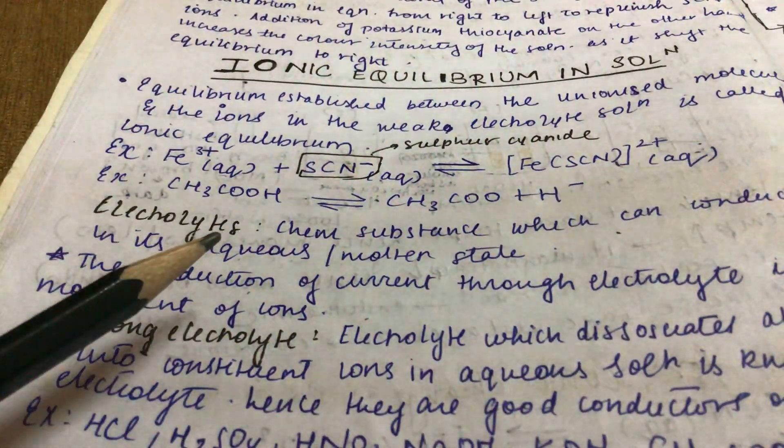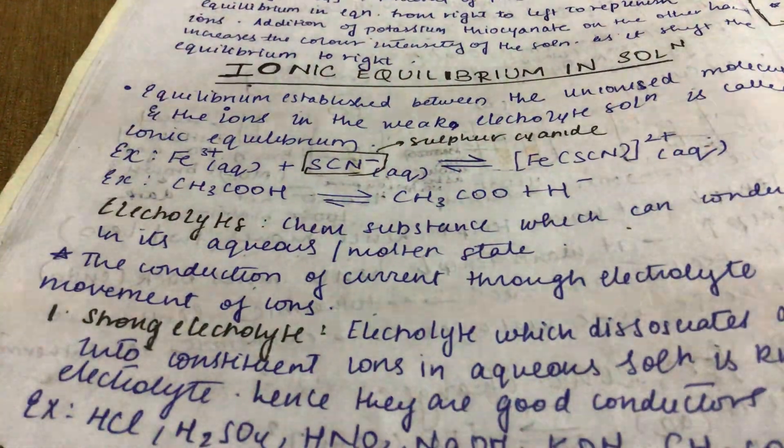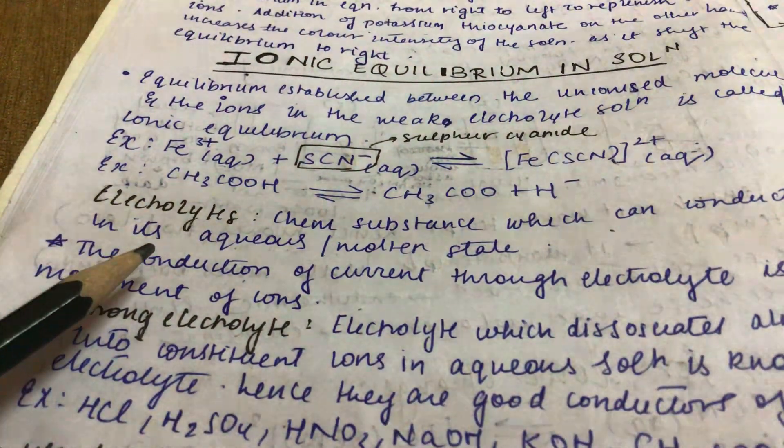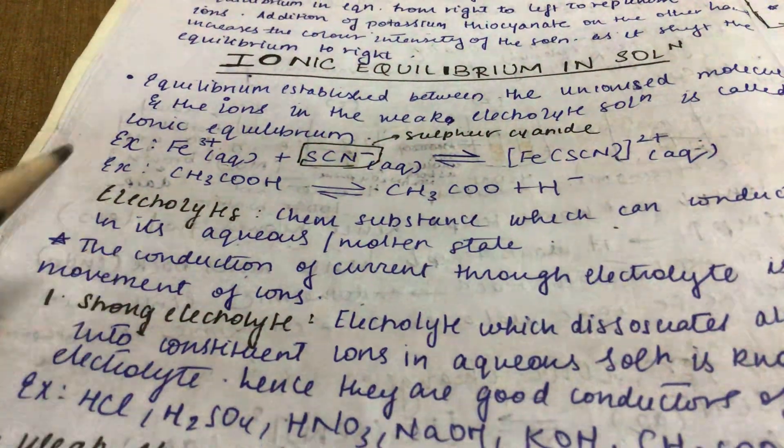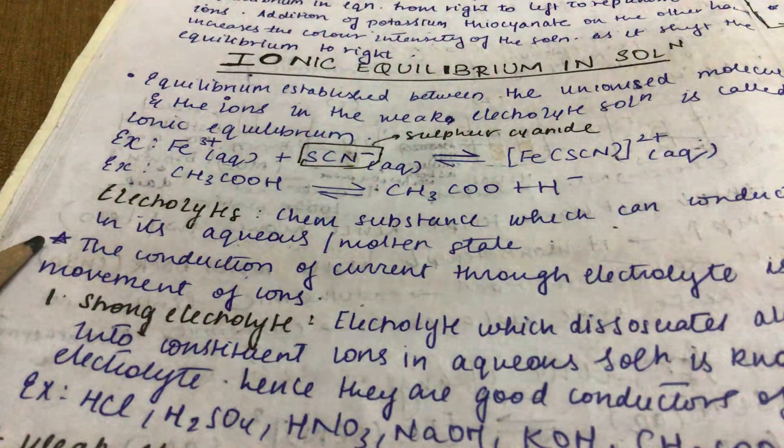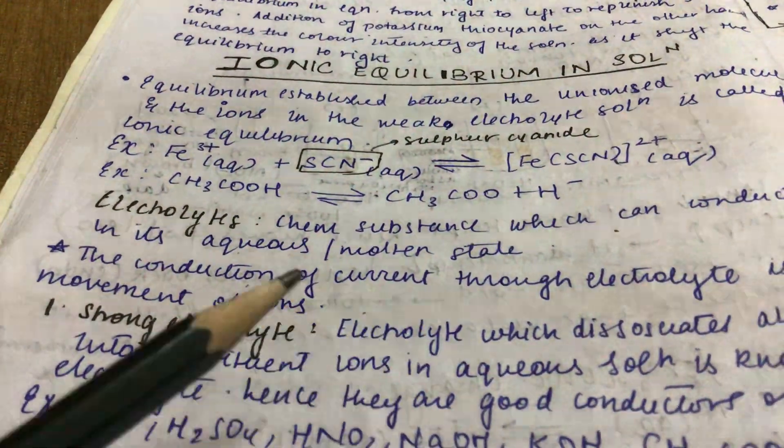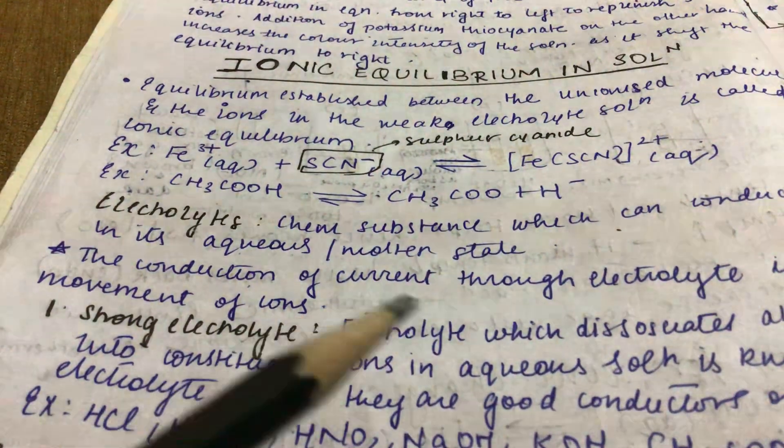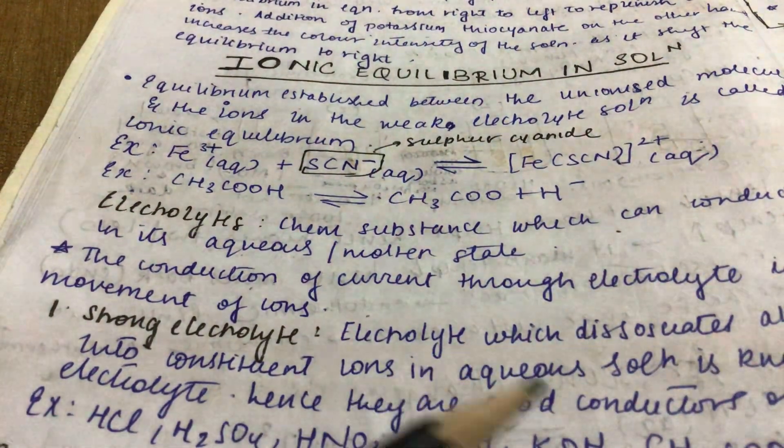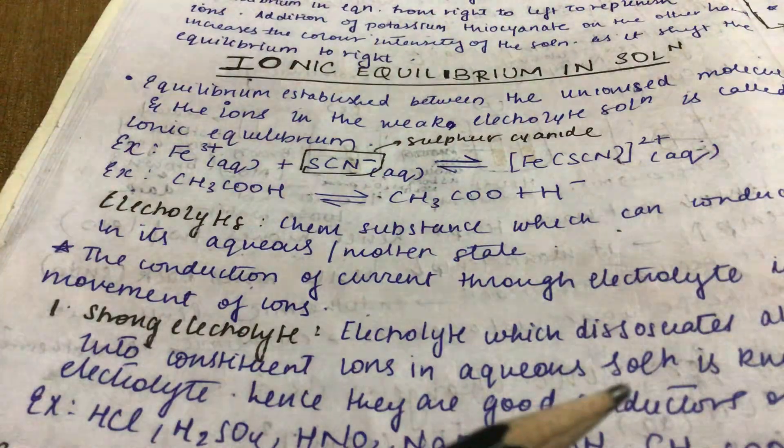Strong electrolyte is an electrolyte which dissociates almost completely into constituent ions in aqueous solution. Hence they are good conductors of electricity. Examples: HCl, H2SO4, HNO3, NaOH, KOH, CH3COO, NH4Cl.